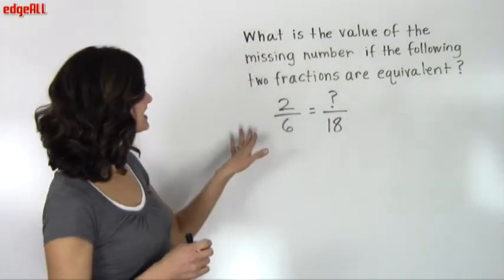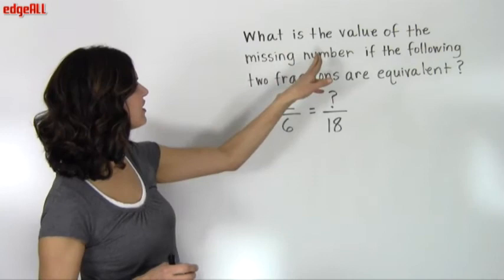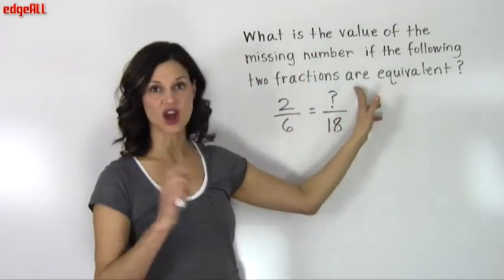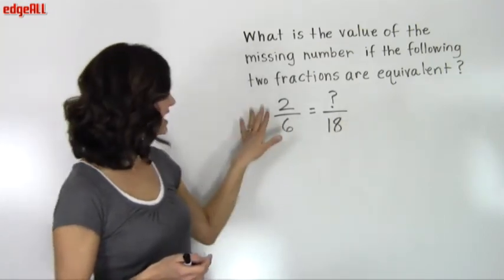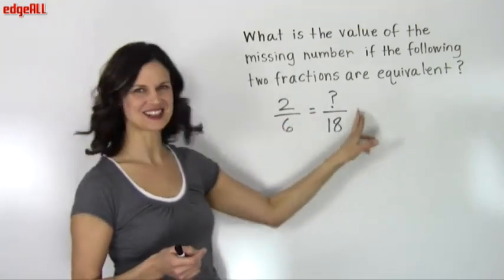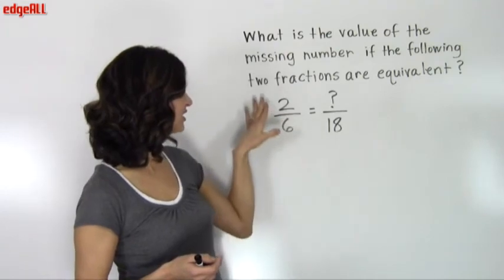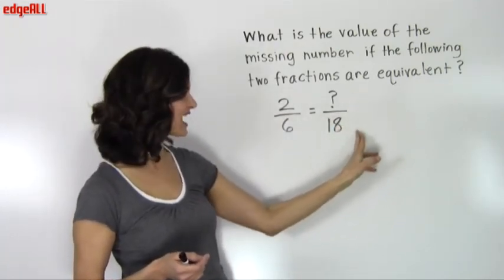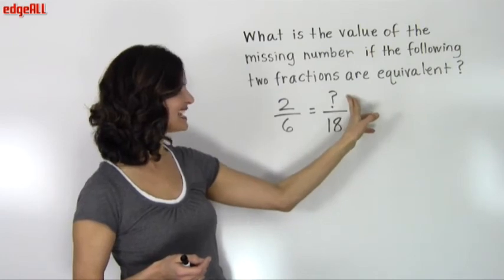So let's look at this example. It says what is the value of the missing number if the following two fractions are equivalent? So I've got two fractions here written next to each other, 2 over 6 and some number over 18. We've got a missing number here.